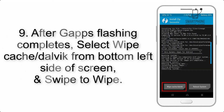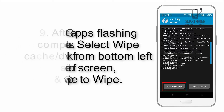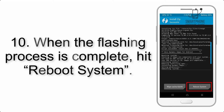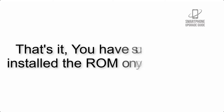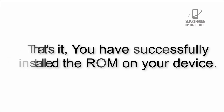Step 9: After GApps flashing completes, select Wipe Cache and Dalvik from the bottom left side of the screen and swipe to wipe. Step 10: When the flashing process is complete, hit Reboot System. That's it — you have successfully installed the ROM on your device.